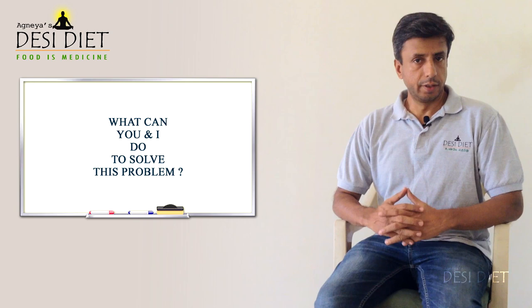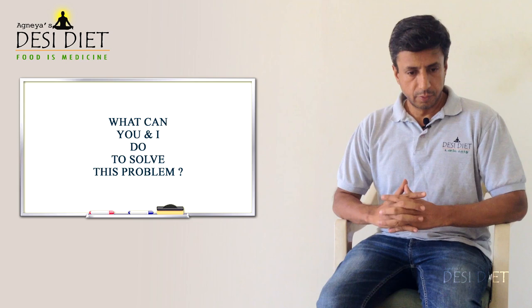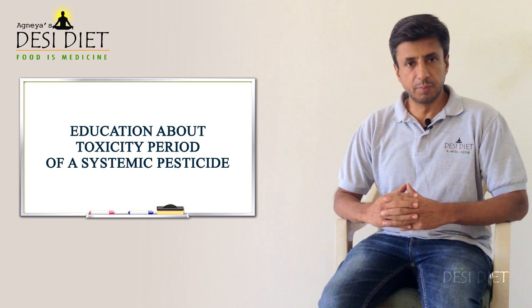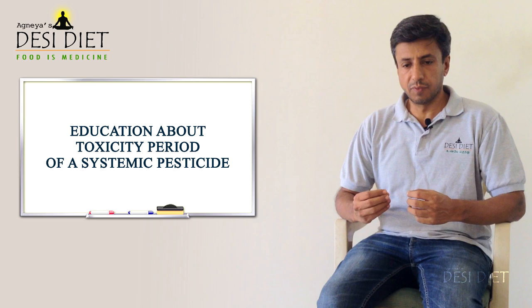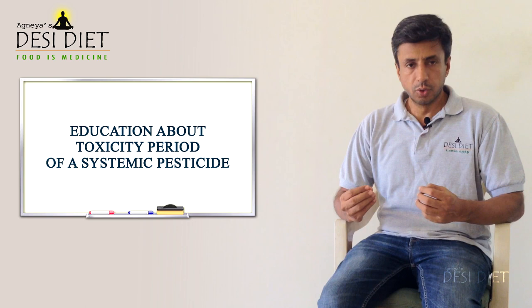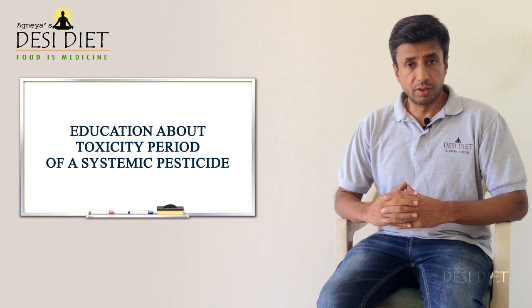What can you and I do to solve this problem of poison in our food? There are a couple of things we can act upon. Number one: we can educate people, including farmers, about what systemic pesticides are. A farmer honestly believes that a pesticide can be washed off. The message needs to reach the farmer that a systemic pesticide has something called a toxicity period — so if a pesticide is used on a crop to be harvested in 10 days, a week, or 15 days, the farmer needs that information and should not use systemic pesticides during that period.